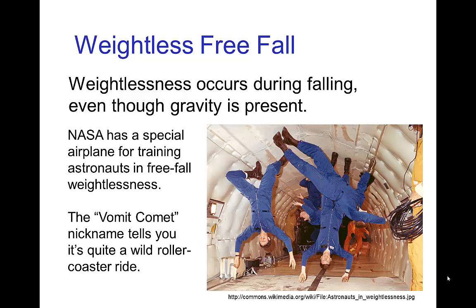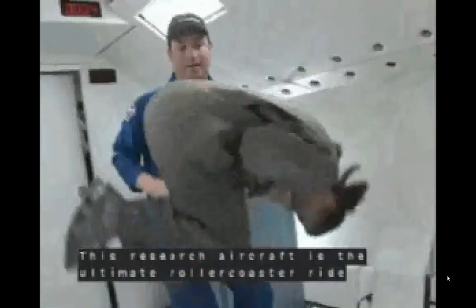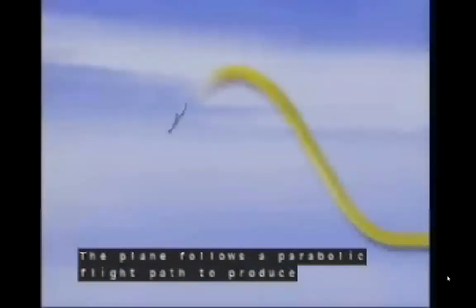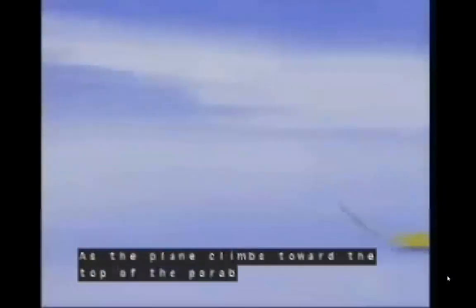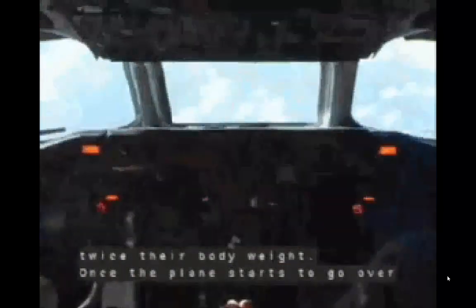In order to train astronauts for weightless conditions they would encounter in the space station and such, NASA has an airplane for training astronauts in free fall. This research aircraft is the ultimate rollercoaster ride, peaking at 34,000 feet over the Gulf of Mexico. The plane follows a parabolic flight path to produce weightlessness. A typical flight consists of about 32 arcs. As the plane climbs towards the top of the parabola, passengers feel nearly two G's, or twice their body weight. Once the plane starts to go over the top and begins descending back toward Earth, flyers free fall, experiencing nearly 25 seconds of zero gravity.